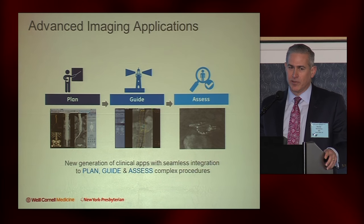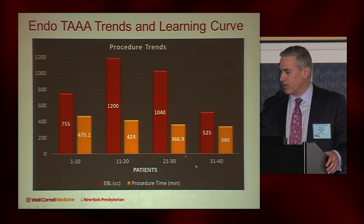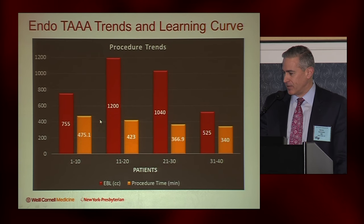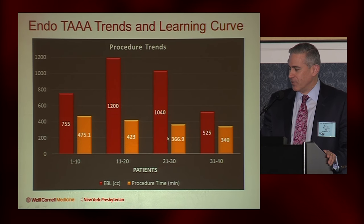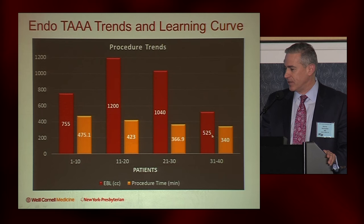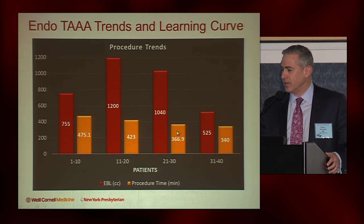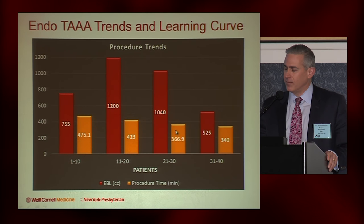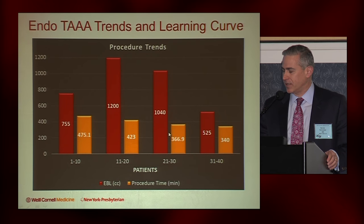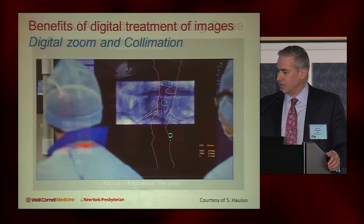You can assess the quality of your reconstruction right there in the operating room to correct any issues. Looking at our earlier experience with thoracoabdominal endovascular repairs at Cornell, we started aggressively using fusion imaging around patient number 20, and you can see a progressive decrease in procedure time. That's not just from fusion — there are learning curve issues — but fusion was key, along with converting almost completely to percutaneous techniques and using different sheath technology to reduce blood loss. The image guidance, I think, was key to a lot of this.